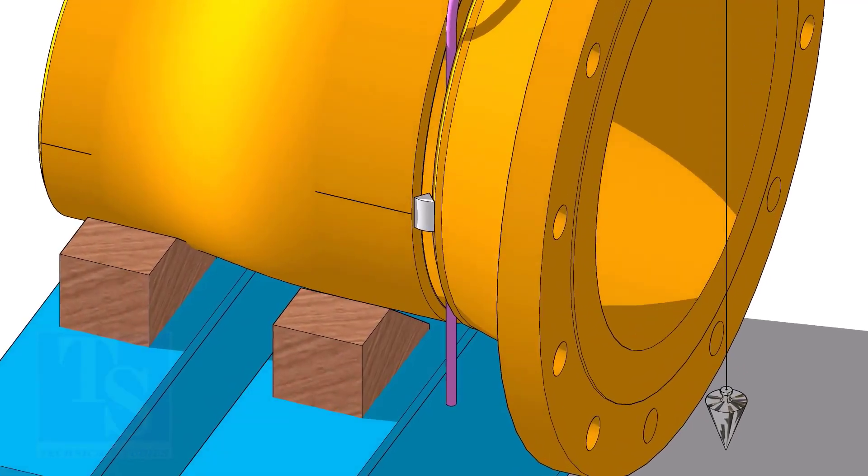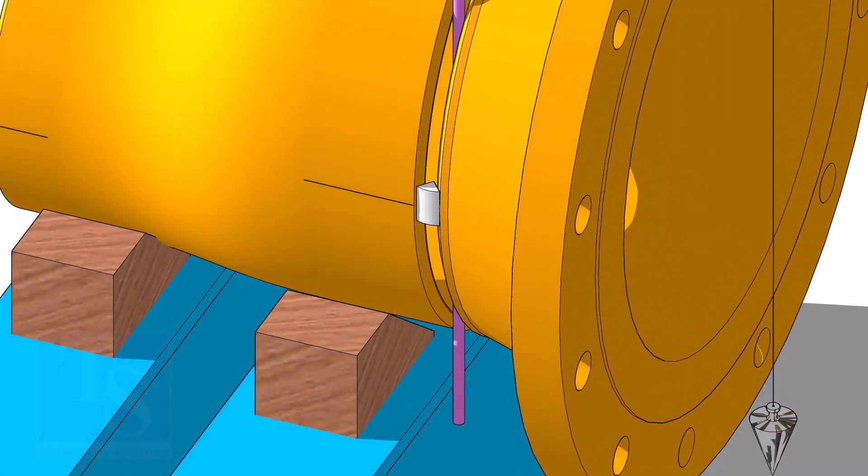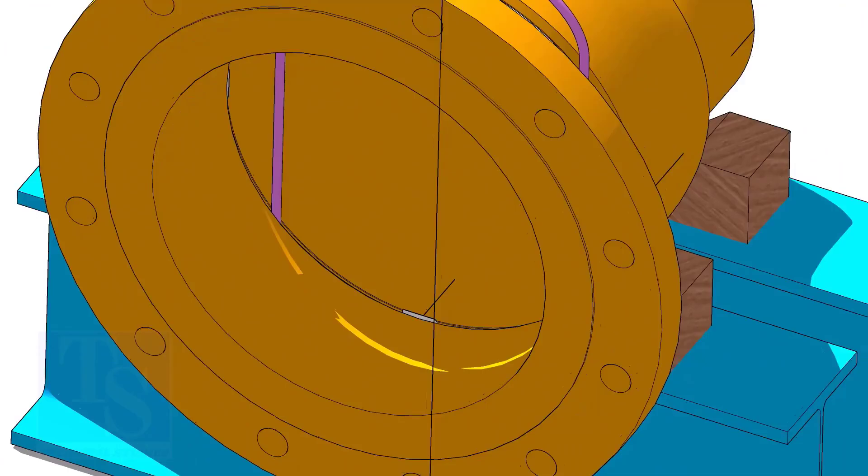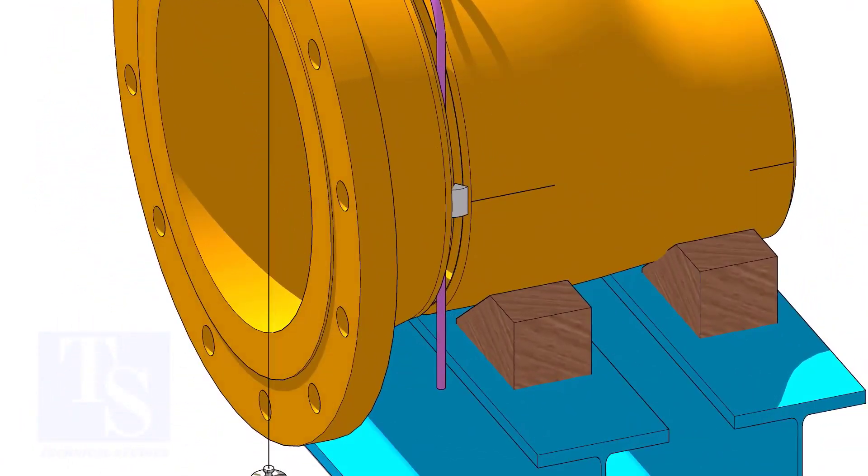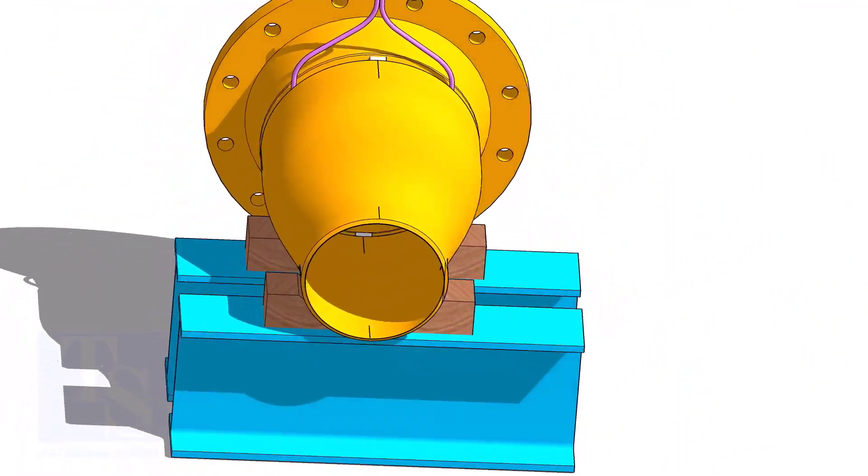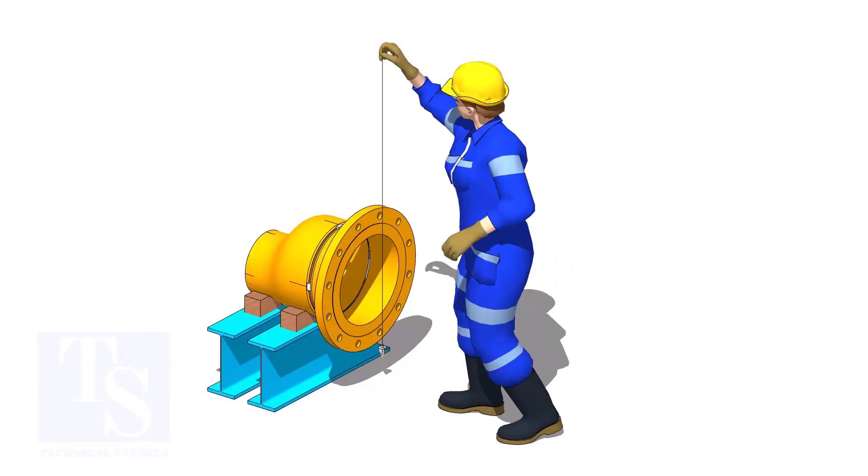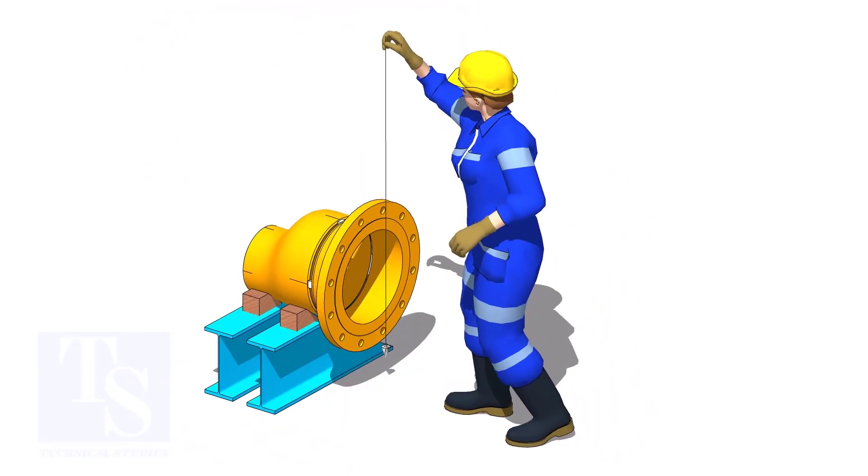If the gap is correct, tack weld on sides. Check the vertical and hole plumbness.